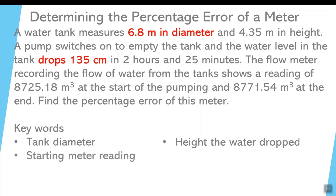The starting meter reading, when the water first started to pump out of the tank, the meter said that up until that point, 8,725.18 cubic meters of water had moved past that point in the line. At the end of this particular time period, there was 8,771.54 cubic meters. So we'll be able to find the difference of that. That's how much the water dropped in that time period.